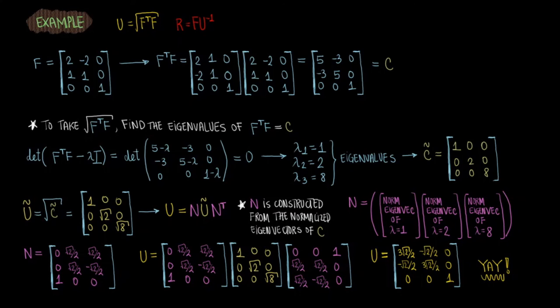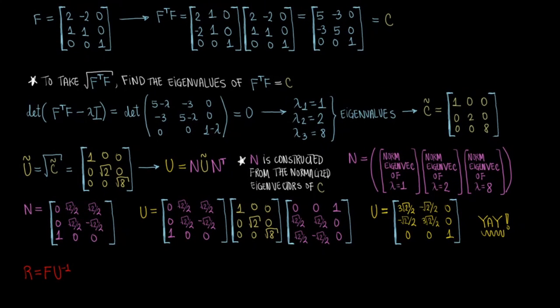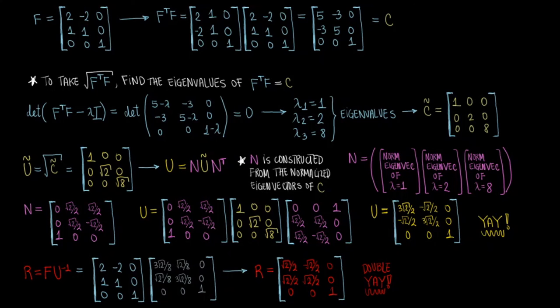From here, everything is straightforward. You can get the rotation tensor R from the expression we got earlier, where we multiply the deformation gradient tensor F by the inverse of U. Plugging things in, we get our rotation tensor, which is yay, double yay now.